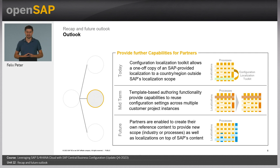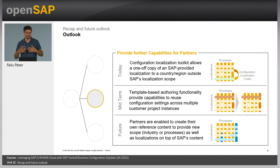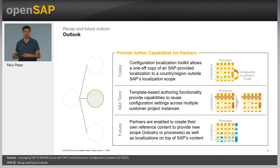Looking into the partner capabilities: what we offer today — as shown in Unit 8 — is the Configuration Localization Tool. With this tool, you are able to create your own localization based on a reference country or reference localization provided by SAP, and based on that, implement company codes and legal entities in countries outside of the SAP best practice reference localization scope.